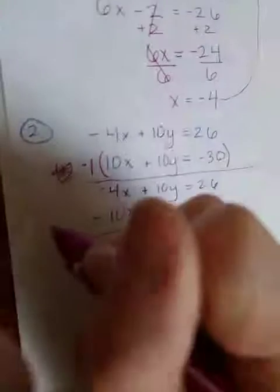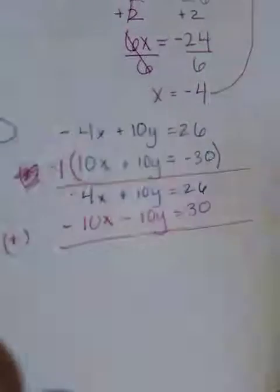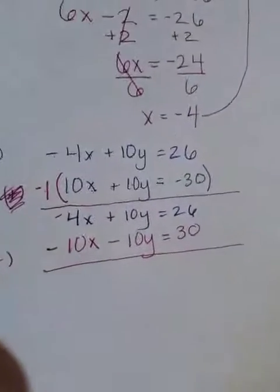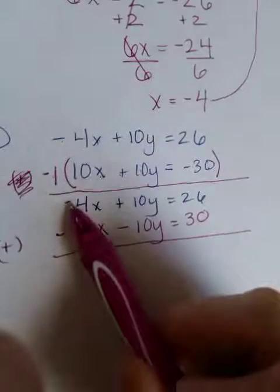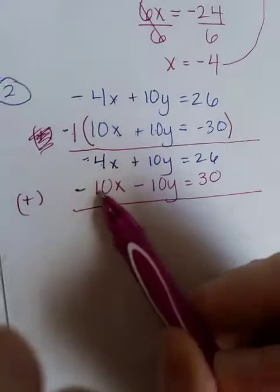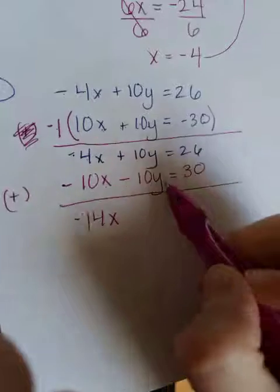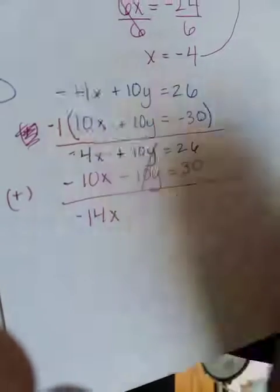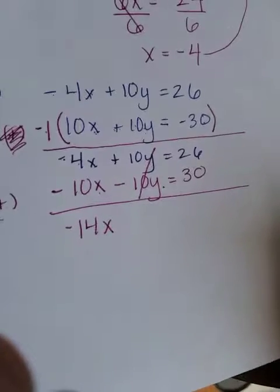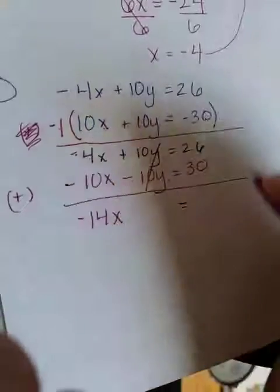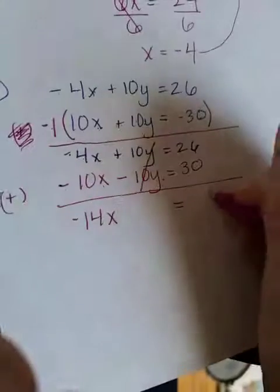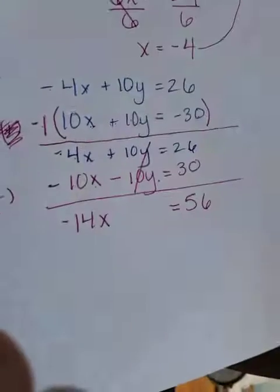Okay, so now stop and take a look. Can we add these together and get one of the variables to go away? Well, let's look. What's negative 4x minus 10x? That's going to be a negative 14x. What's a 10y plus a negative 10y? You're right. Those cancel out because that is what we just wanted to happen. And then what's a 26 plus a 30? That is a 56.